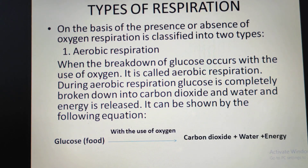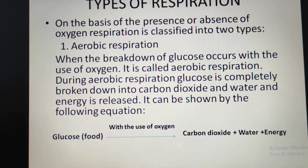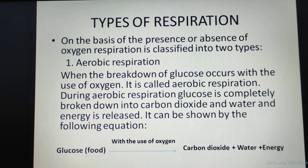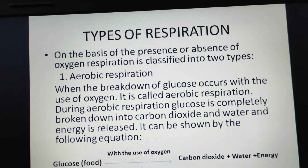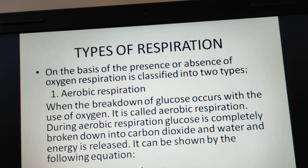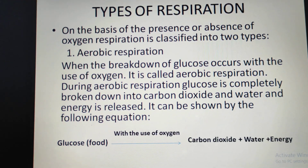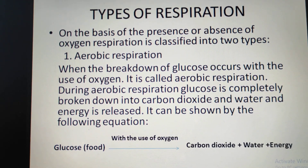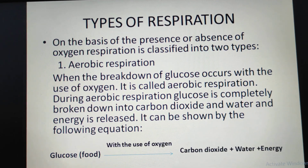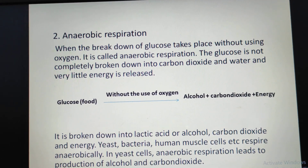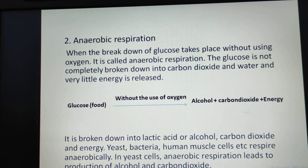On the basis of the presence or absence of oxygen, respiration is classified into two types. Aerobic respiration: when the breakdown of glucose occurs with the use of oxygen, it is called aerobic respiration. During aerobic respiration, glucose is completely broken down into carbon dioxide and water, and energy is released. Aerobic respiration occurs in all organisms. It can be shown by the following equation: glucose (food) + oxygen → carbon dioxide + water + energy.